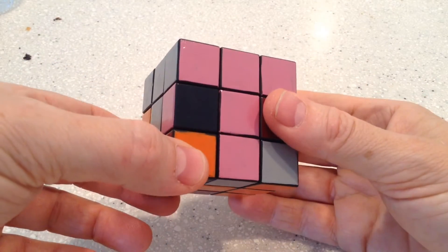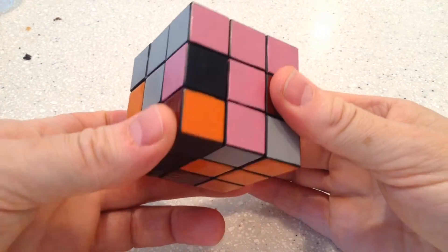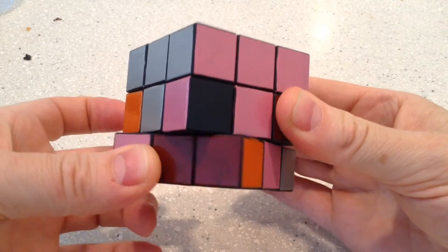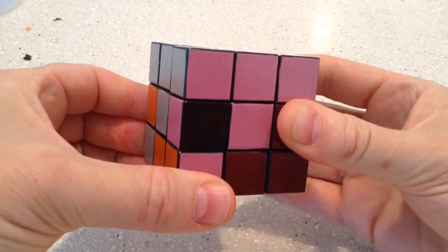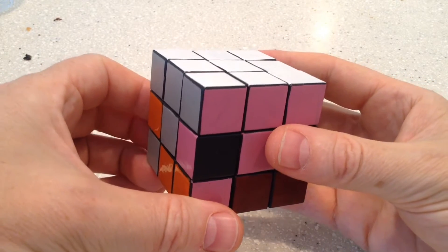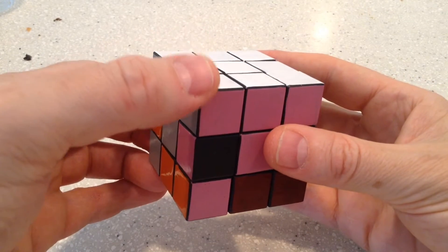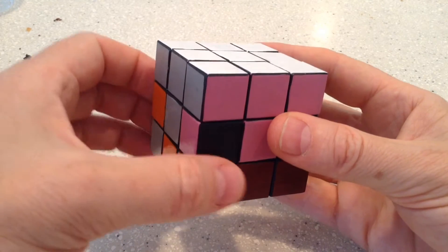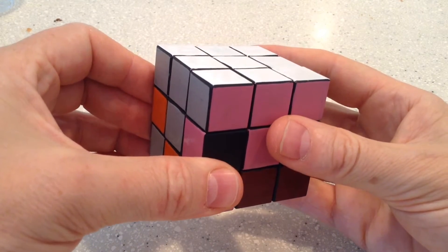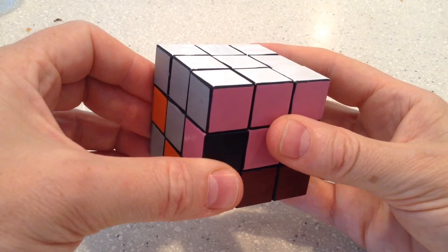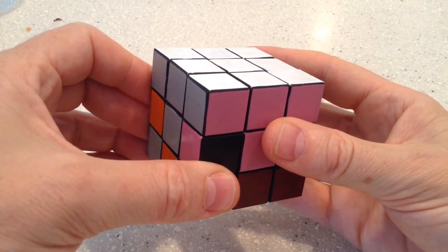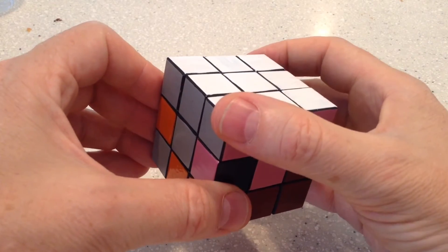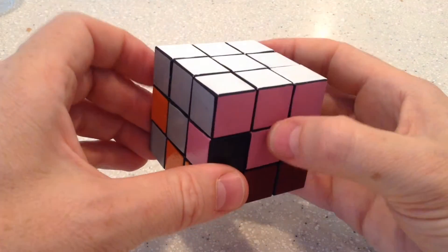So, first thing you do is move it away from the second side, and then you perform a combination of two moves which takes this piece out of place, and then brings it back into place. And these are moves that you'll see in the other video on inserting the corner pieces into the first layer.